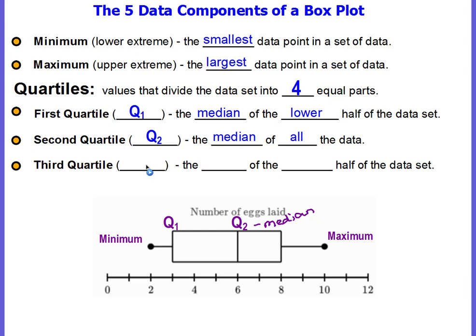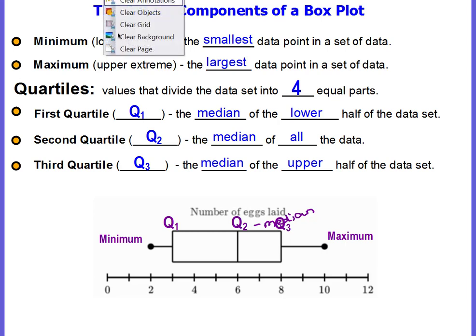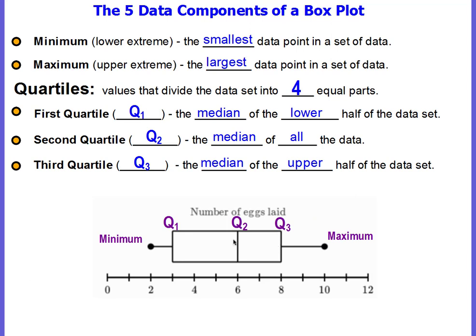The third quartile, Q3, is going to be the median of the upper half of the data set, and this is your quartile three right here — it is the right side of the box. These are the five data components that you need to know anytime you're looking at a box plot or you want to make a box plot.